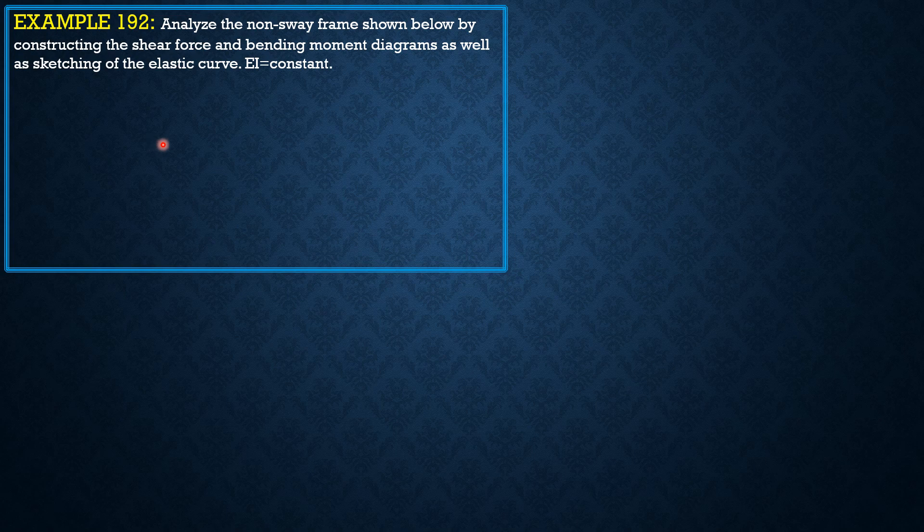So in this frame, EI is constant. This frame has no side sway. It is an unsway frame because of the restraint at the upper level of this frame. It is a one column, one story frame.